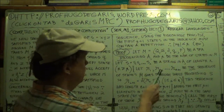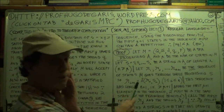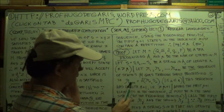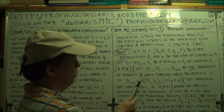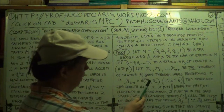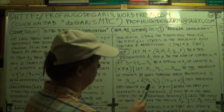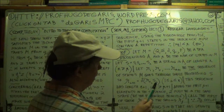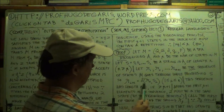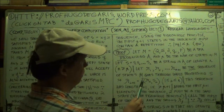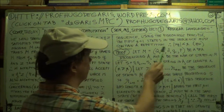So each successive state — the i-th to the i-th plus one — will be determined using the transition function delta from the current state and the input symbol that you're reading. That's your transition function delta for this machine.